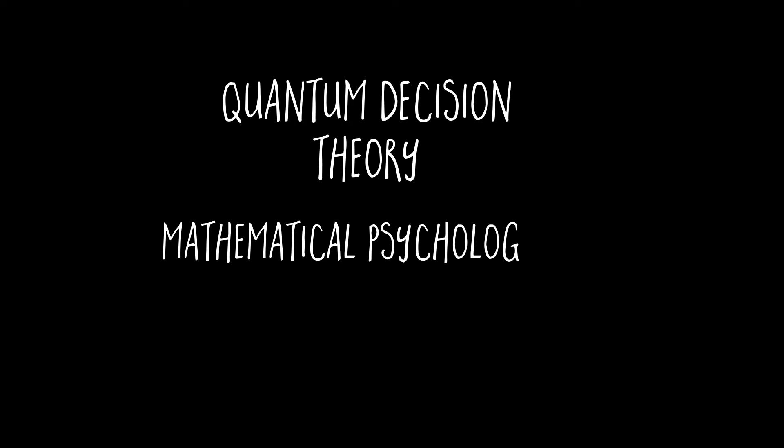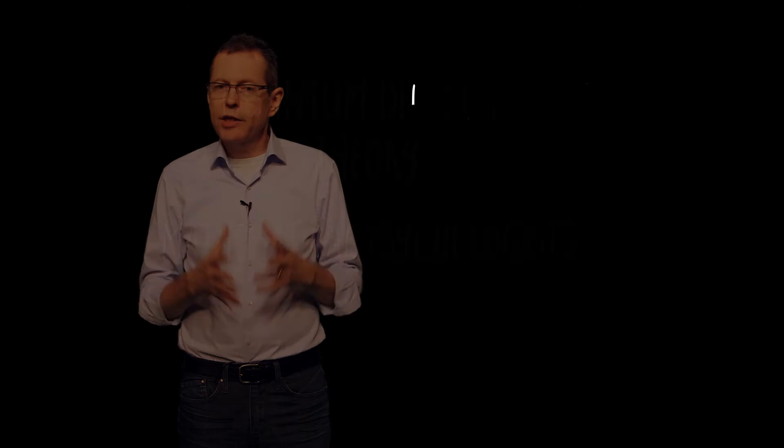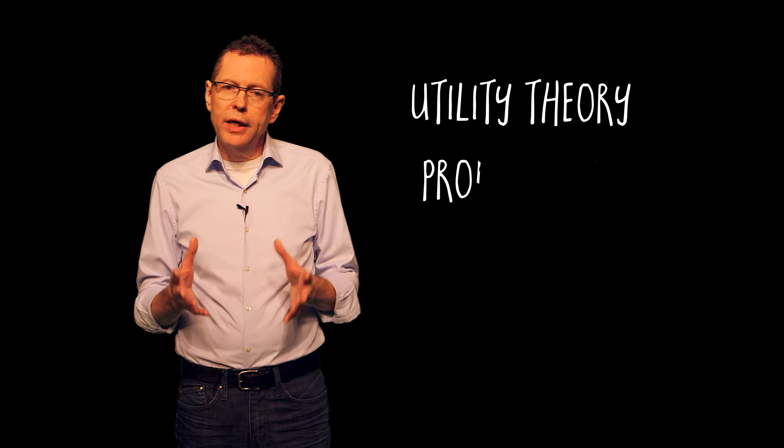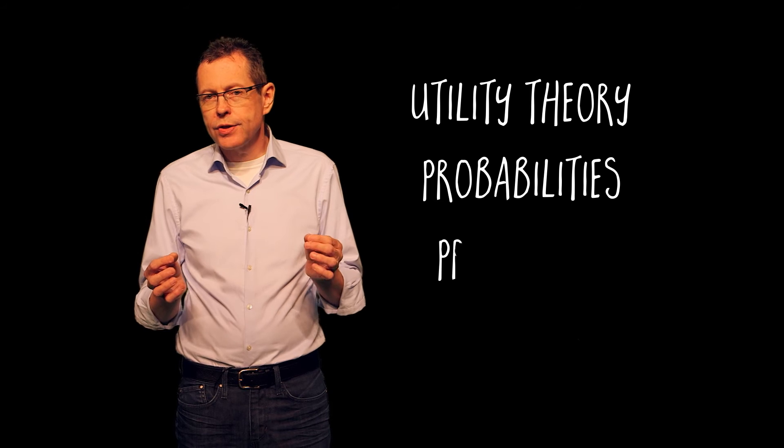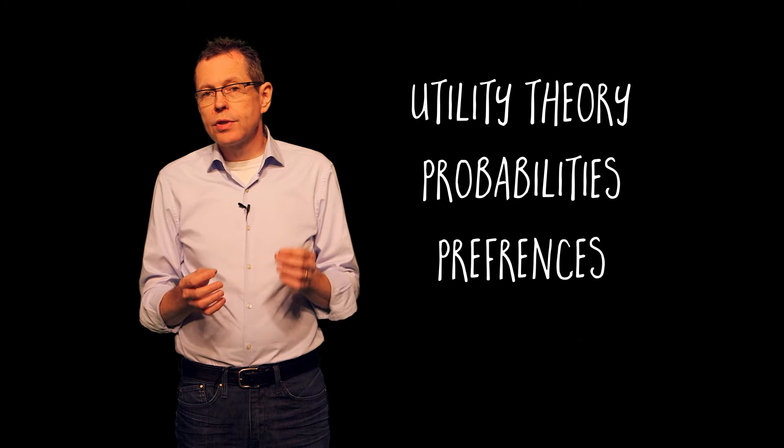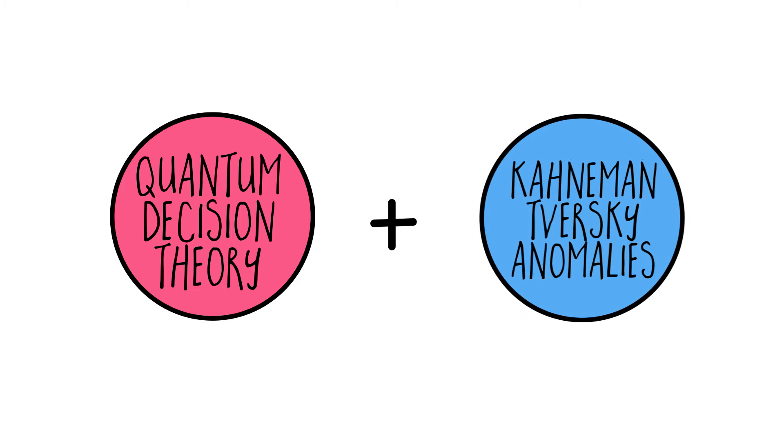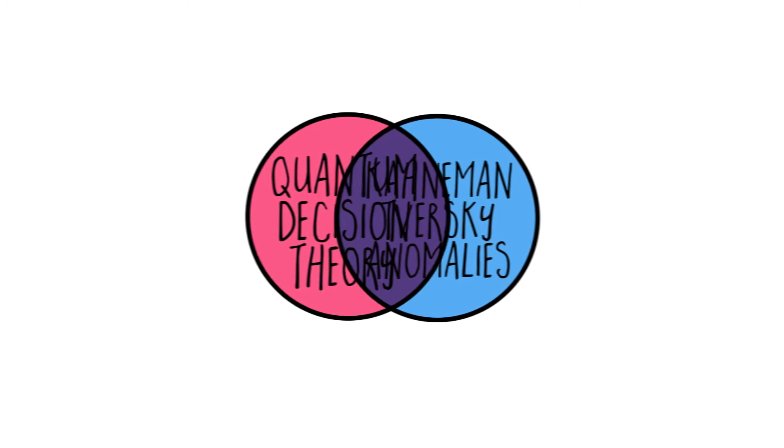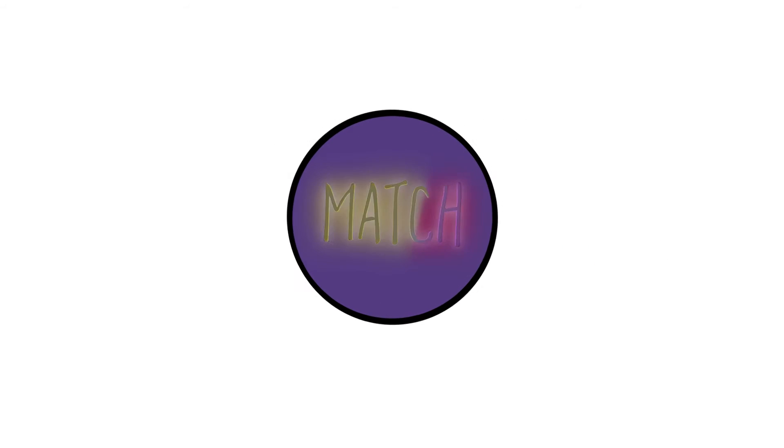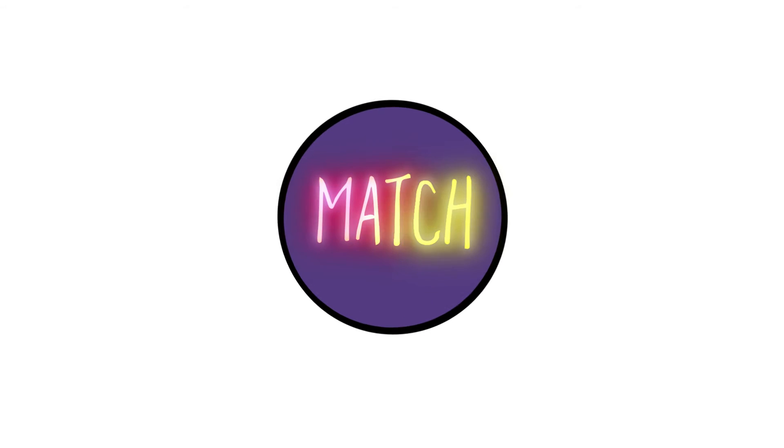Enter quantum decision theory, which was developed about 10 years ago by mathematical psychologists and physicists. As its name suggests, this is a quantum version of expected utility theory, which allows decision makers to form probabilities and preferences according to the rules of quantum rather than classical logic. And here's the kicker. When you match up quantum decision theory against the Kahneman-Tversky anomalies, the theory predicts every one with a single axiomatically well-founded framework.